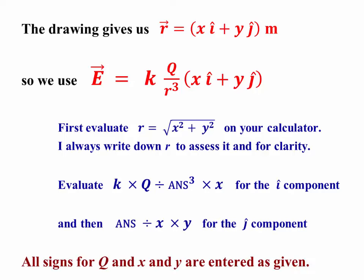Then, this is the real trick: take that answer, divide it by x, and multiply by y. Dividing by x strips you back to kq over r cubed, so then you just multiply by y. And then again, with all of the signs correct, the correct sign for x and the correct sign for y, you have the value for the j hat component.